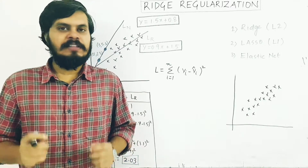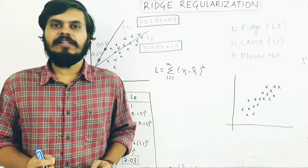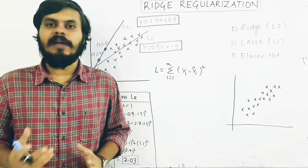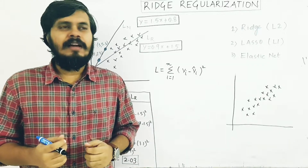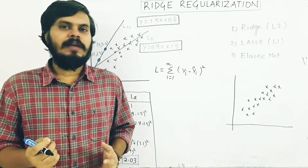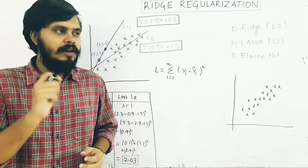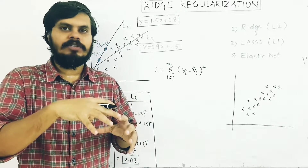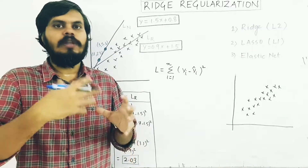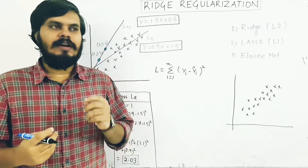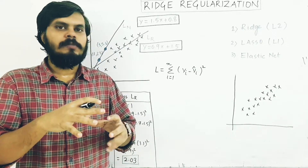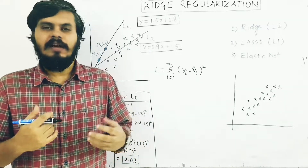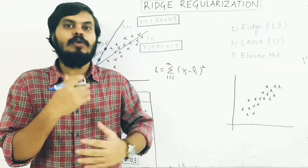In this video we'll be learning about regularization. What is regularization and where should we use it? If you search on Google or Wikipedia, you get this definition: regularization is a technique using which you induce some added information in a machine learning model so that you can reduce overfitting. So regularization adds something extra to the machine learning model which causes overfitting to decrease.